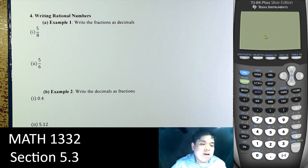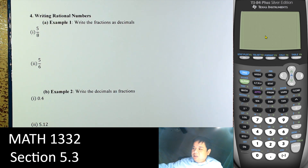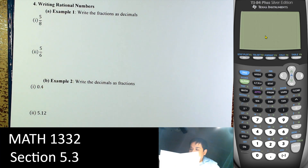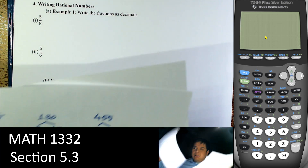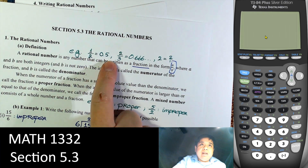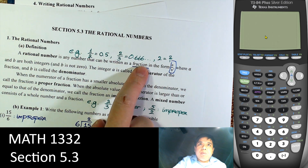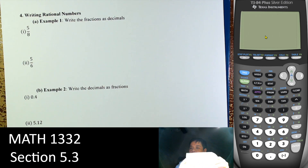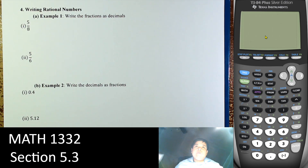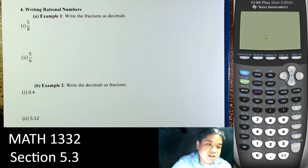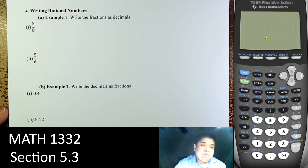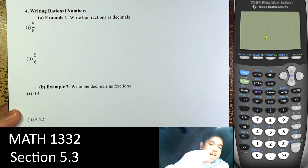Next, 5 over 8 — write that as a decimal. As mentioned before, rational numbers can be terminated decimals or repeating decimals, because all of them can be written as fractions. To write 5/8 as a decimal, we just divide — the bottom goes into the top.